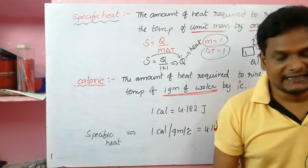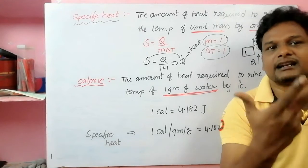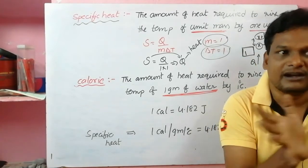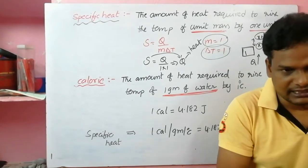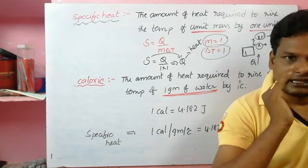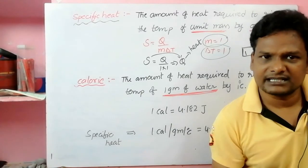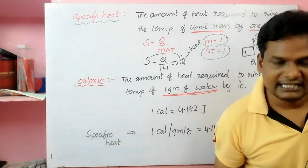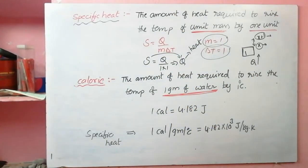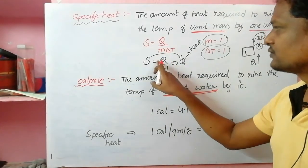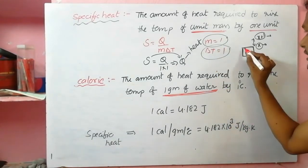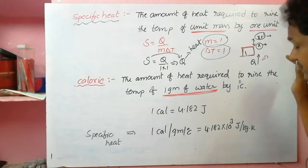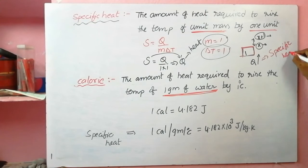For different materials, when you supply heat energy, how it distributes internally is different, which is why specific heat varies. So the identity of specific heat: for unit mass of a substance, to raise the temperature by one degree, the heat energy you need to supply is the specific heat. According to the equation, when m equals one and delta T equals one, S equals Q.